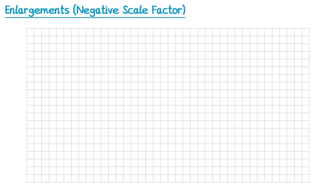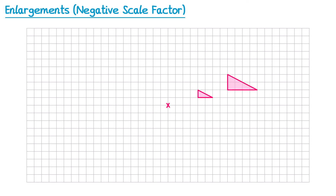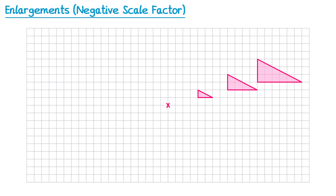In the previous video we took a shape and a center of enlargement. To enlarge the shape we considered the journey from the center of enlargement to a point on the shape. For scale factor 2 we'd repeat that journey a second time, doing the same with all other points to get the enlarged shape. For scale factor 3 we do the journey a third time. The original shape can be considered a scale factor 1 enlargement since it doesn't change size.